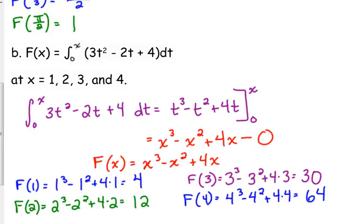When you see something like this, when you have a variable for one of your limits, if X is one of your limits, then take the antiderivative, plug in X for your variable, and then subtract what you get when you plug in your lower limit.